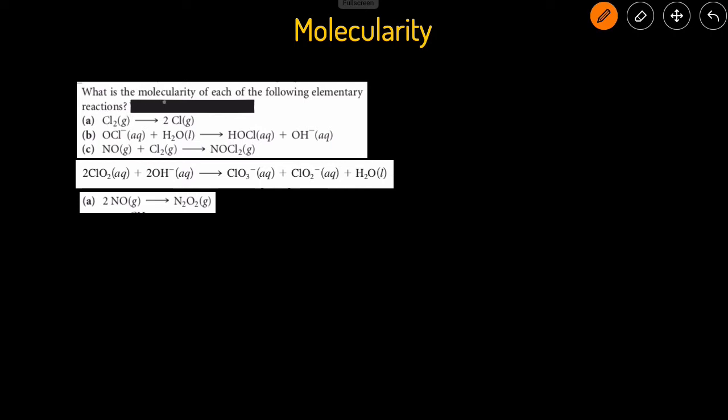For each of these reactions, we have to determine the molecularity, and the way to do that is to look at how many reactants are present in each reaction. In the first one, you can see there's only one reactant, so that makes it unimolecular.